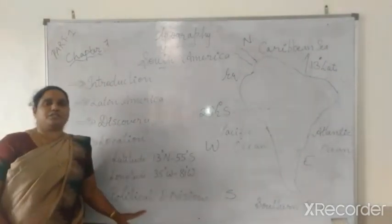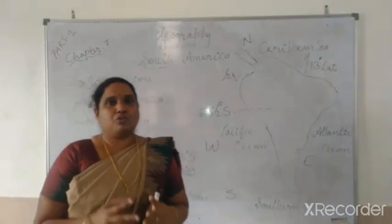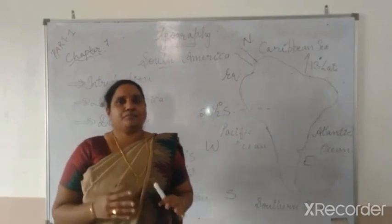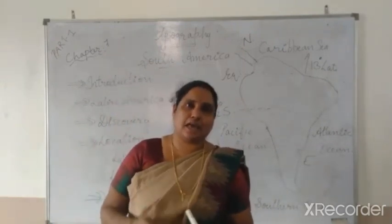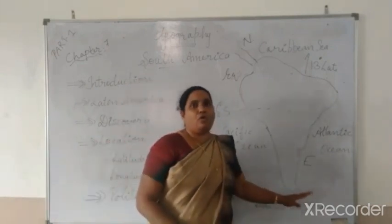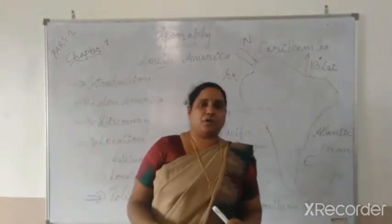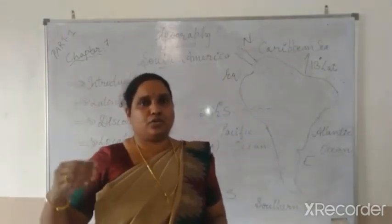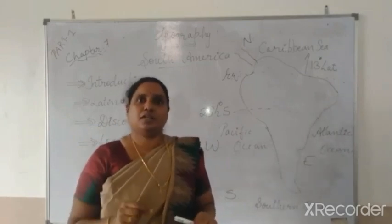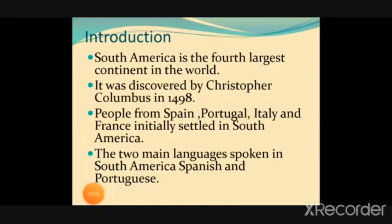Now for the political division of South America: it is divided into 13 countries. The most important one is Brazil, which holds the major share of South America. Then Argentina, Chile, and many other countries are there. The southern coast of South America is called Cape Horn, located in the Tierra del Fuego Island. We will now continue with the PowerPoint presentation, where fill-in questions and short answer questions are identified.